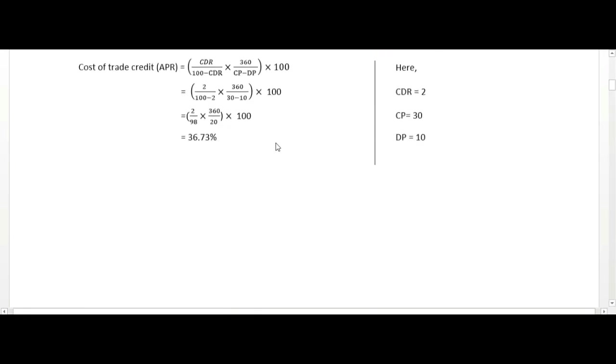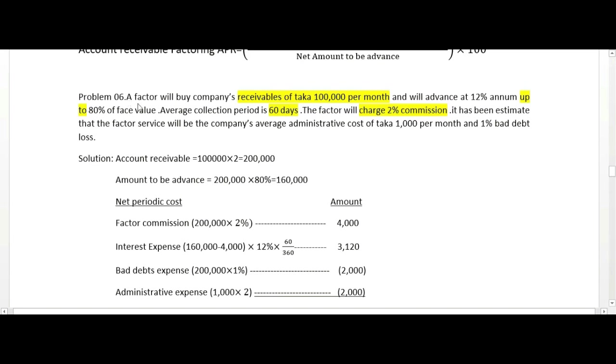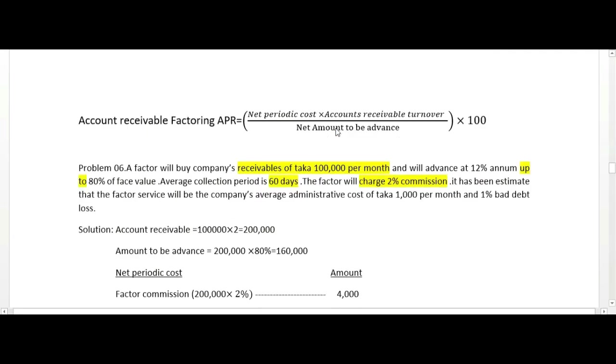Next topic: cost of account receivable factoring. The formula is: net periodic cost times account receivable turnover divided by net amount to be advanced, times 100. Net periodic cost includes several components.